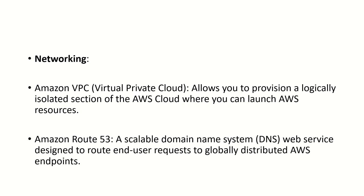Now coming to the next slide, we have networking services. Amazon provides different networking services; I have listed two: Amazon VPC and Amazon Route 53. VPC stands for Virtual Private Cloud — it allows you to provision a logically isolated section of AWS cloud where you can launch AWS resources. Amazon Route 53 is a scalable domain name system — a DNS web service designed to route end-user requests to globally distributed AWS endpoints.